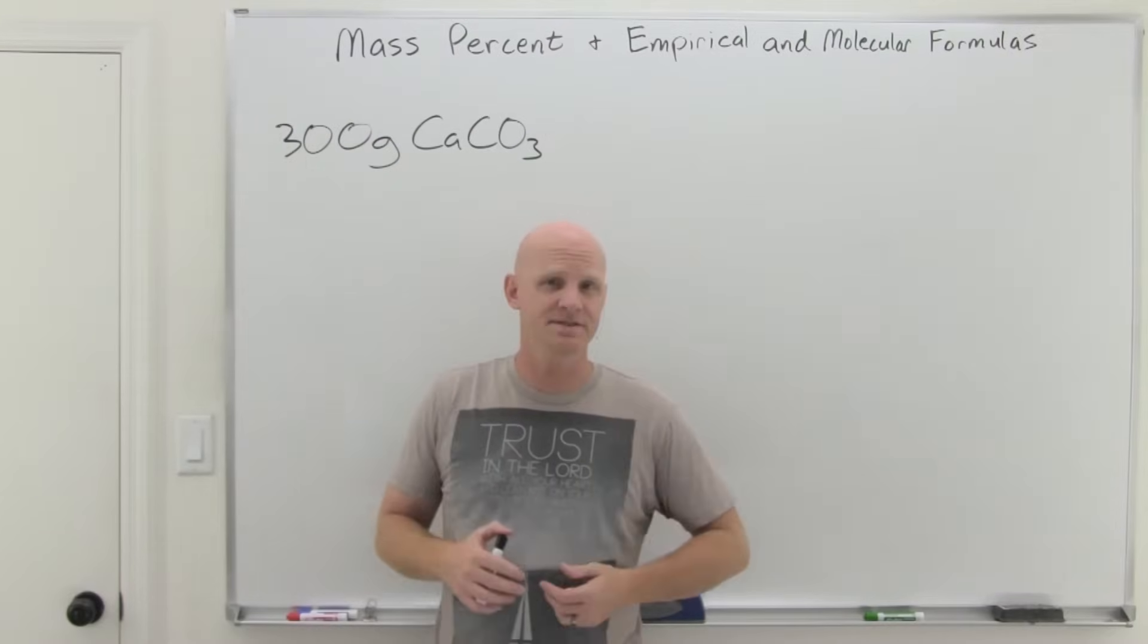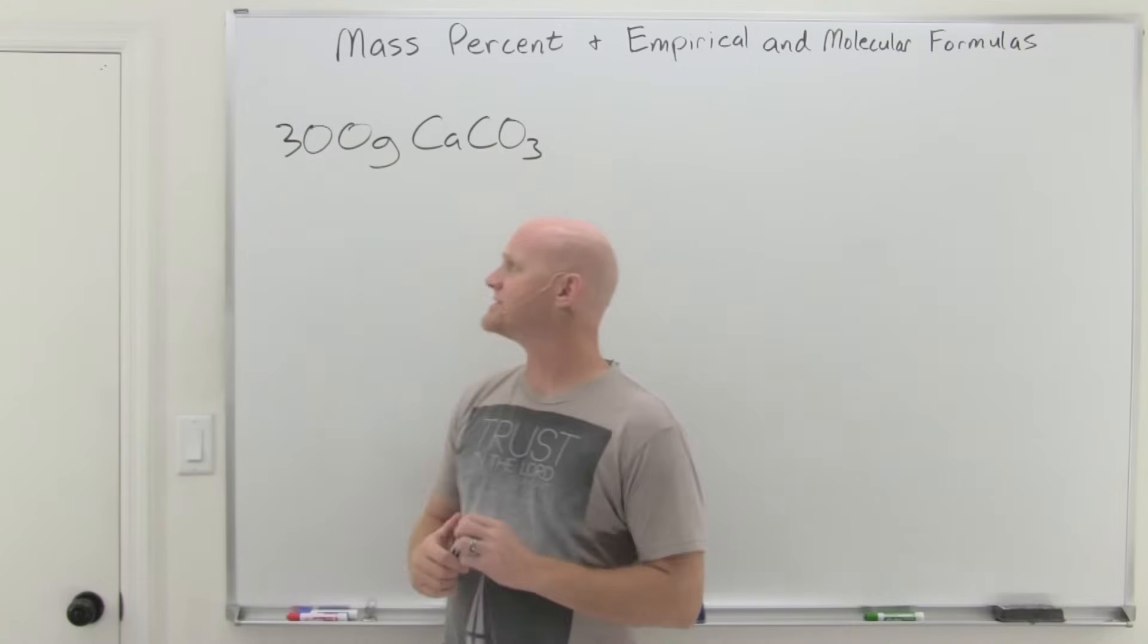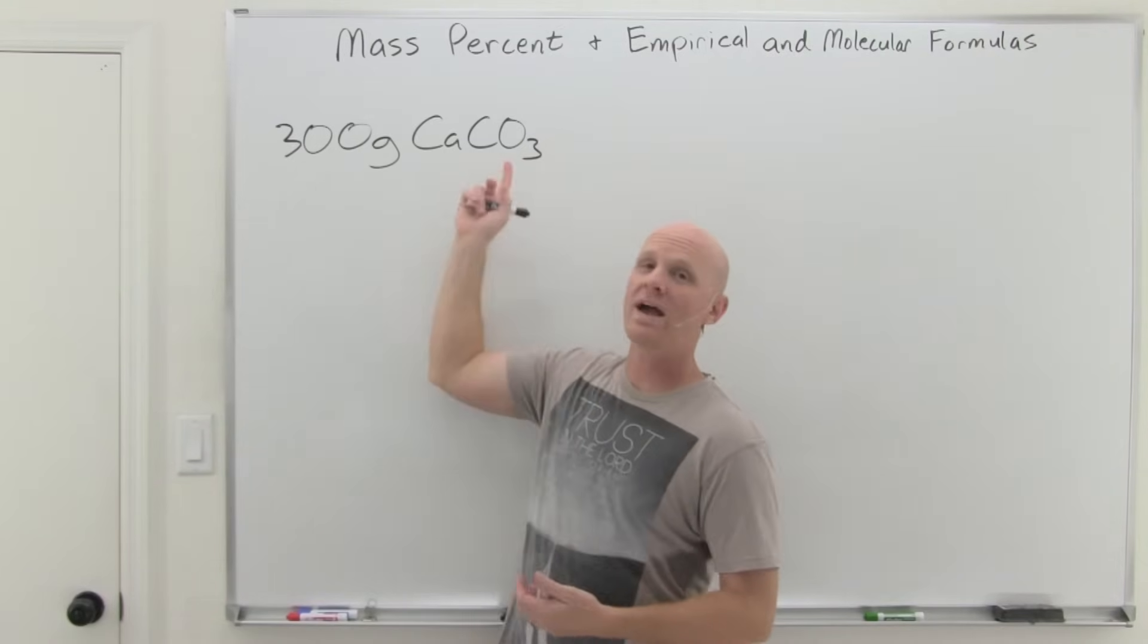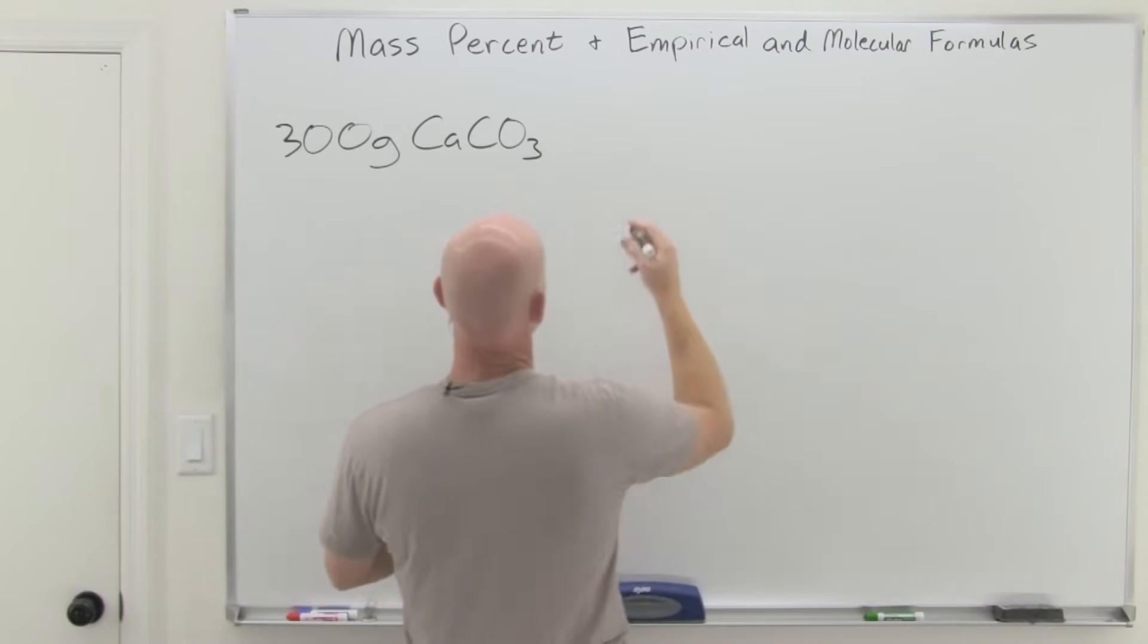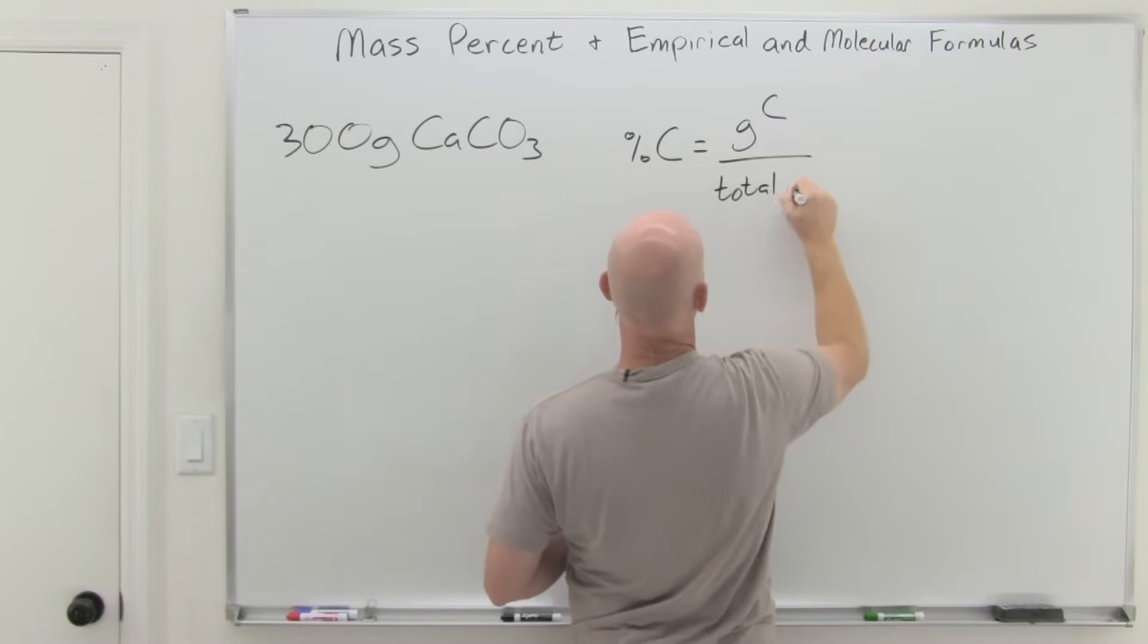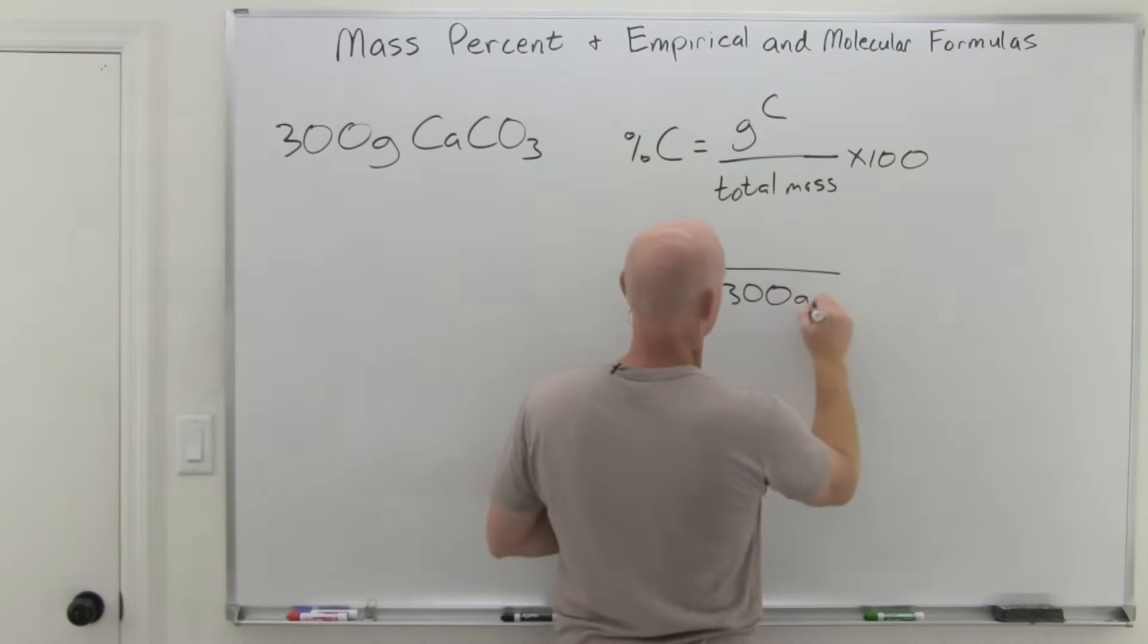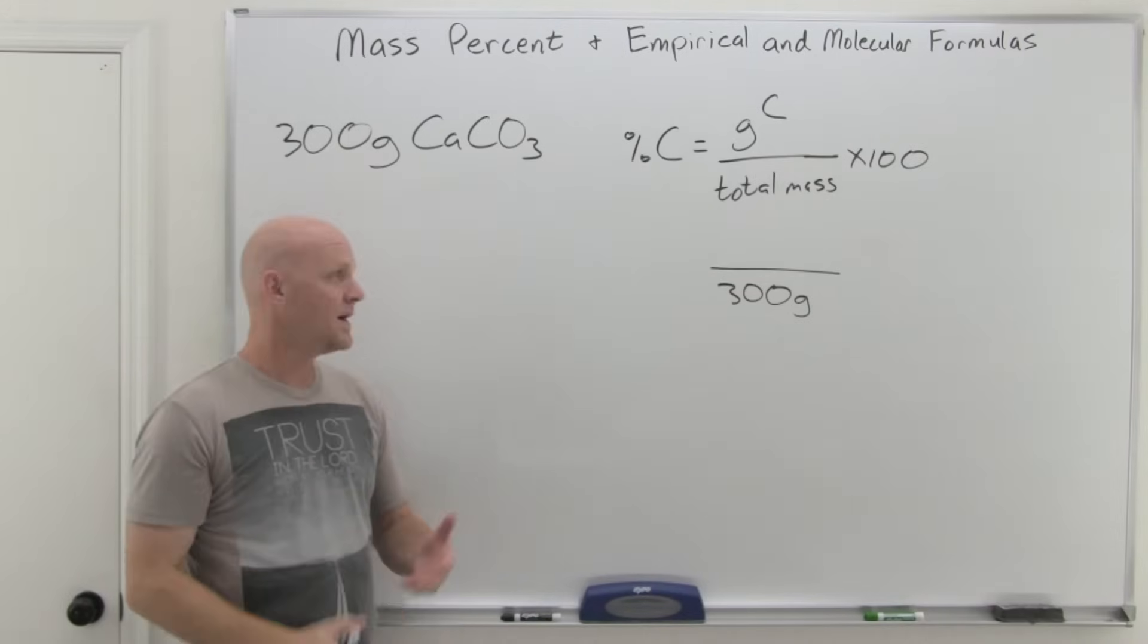Now we're going to take a look at mass percents and see how they can be related to both empirical and molecular formulas. We'll start with just plain old mass percents. We're going to take that 300 gram sample of calcium carbonate we dealt with in the last lesson, and we're going to find the percentage of carbon in the sample and the percentage of oxygen in the sample. We've got 300 grams, and you might think, well, if we want percent carbon, that's going to equal the grams of carbon over the total mass times 100.